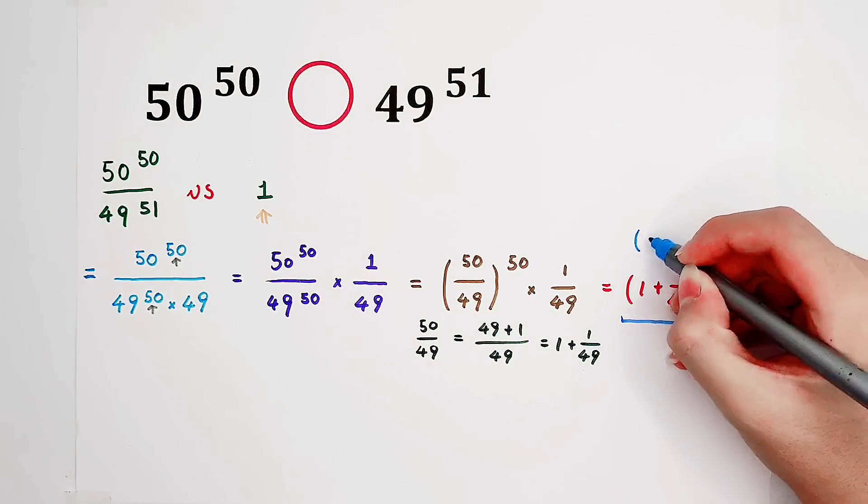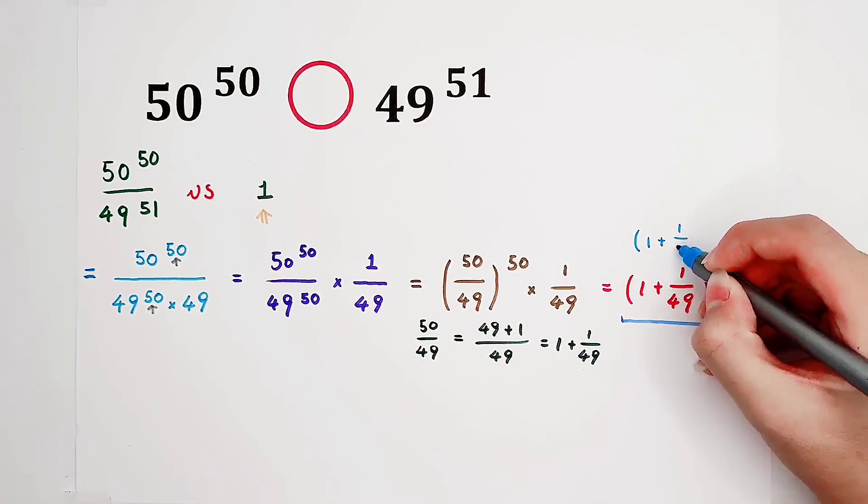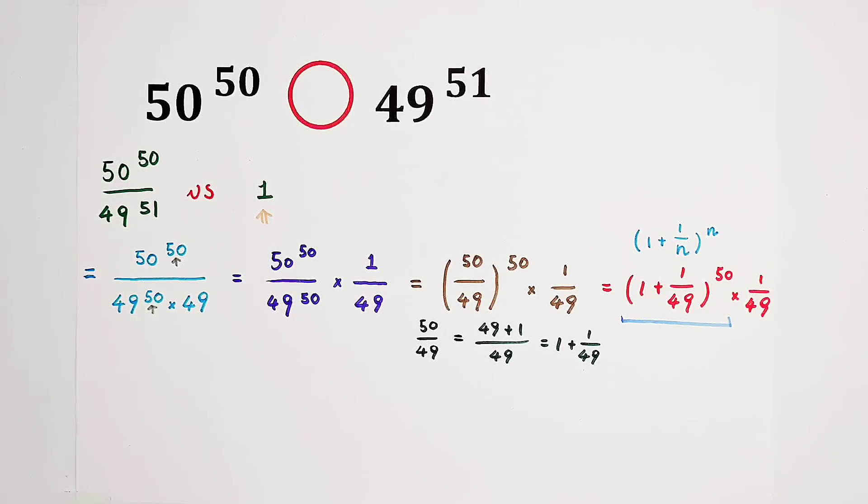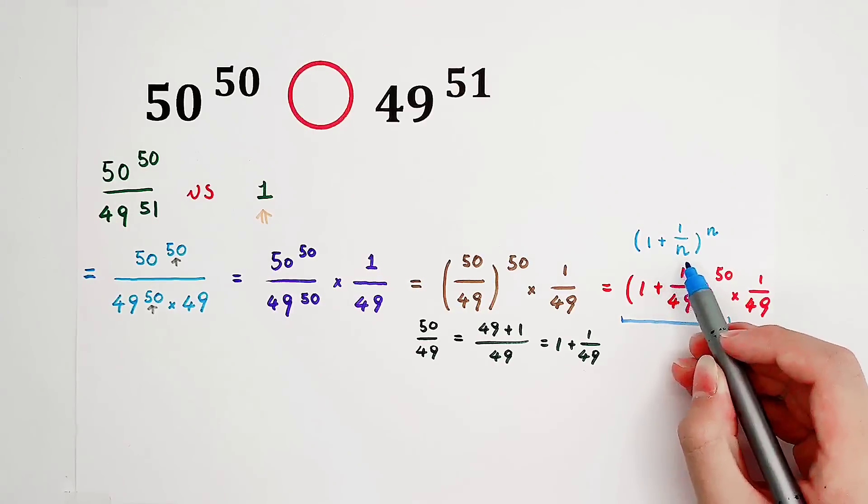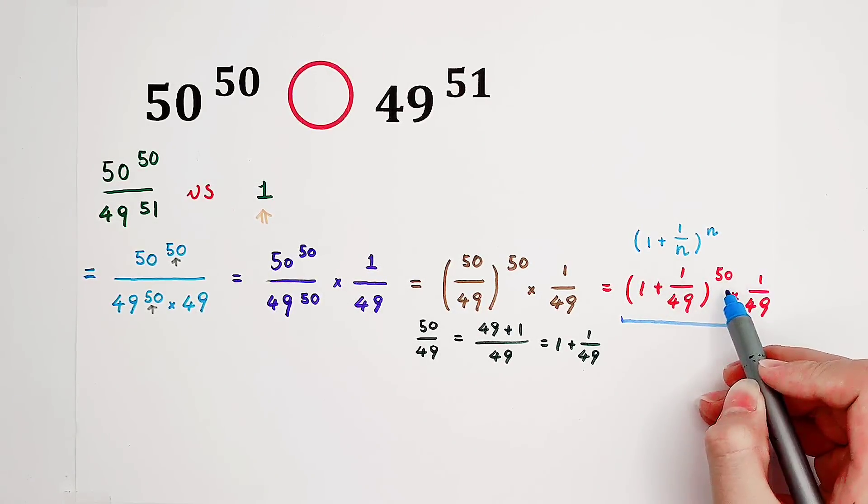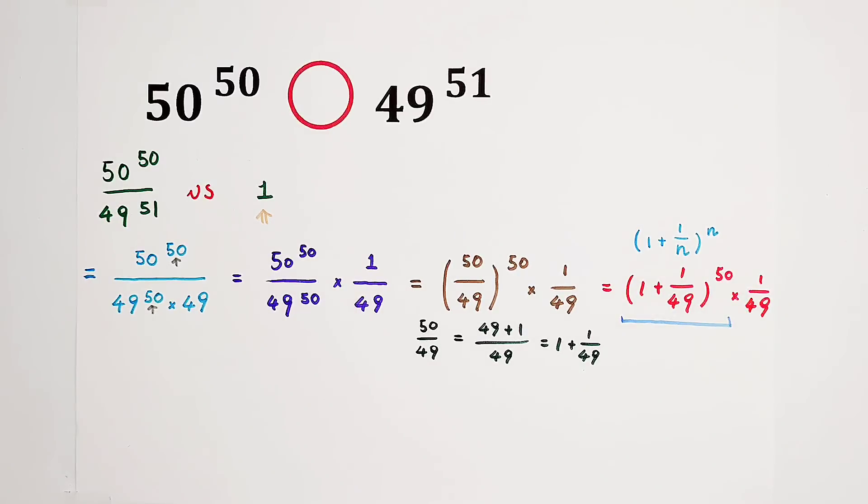We don't like its form. We always like 1 plus 1 over n, all to the power of n. However, if we substitute 49 for n, the exponent is not 49, it's 50. So what's the problem? The exponent. So how can we deal with the exponent?